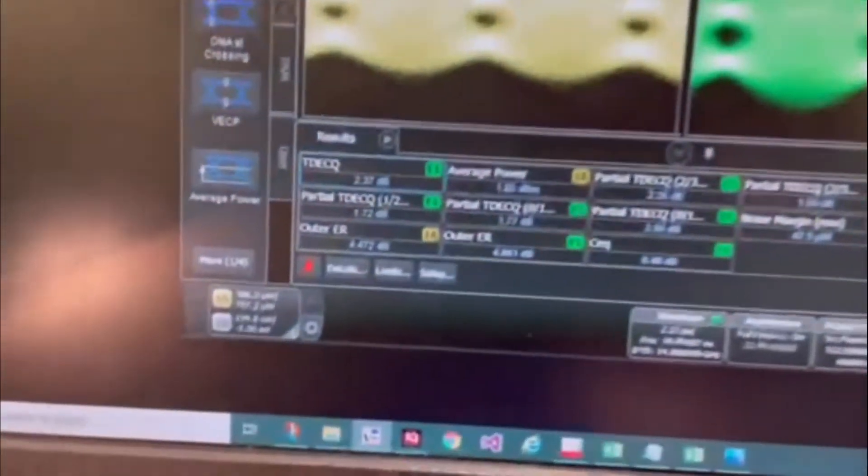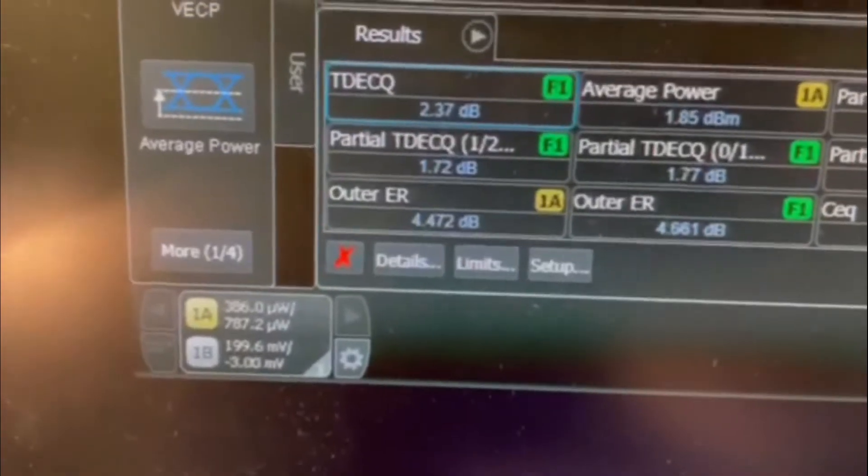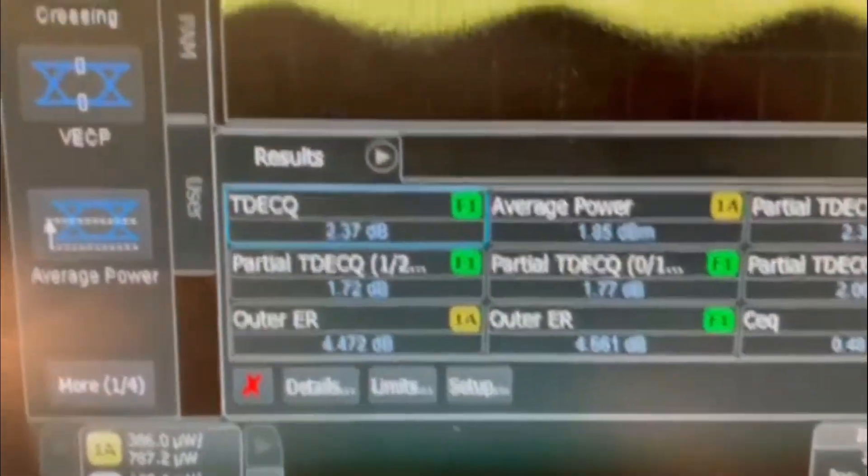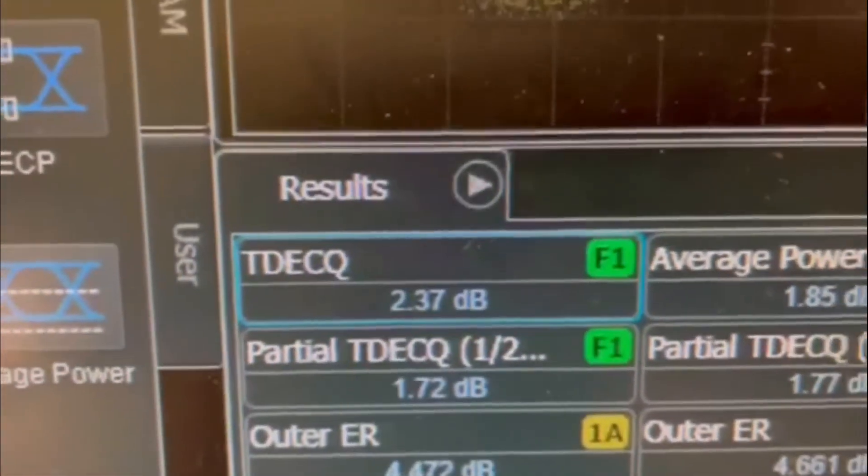Outer extinction ratio is around 4.5 dB, TDEC-Q has risen slightly to 2.4 dB, and the linearity and eye clarity are still good.